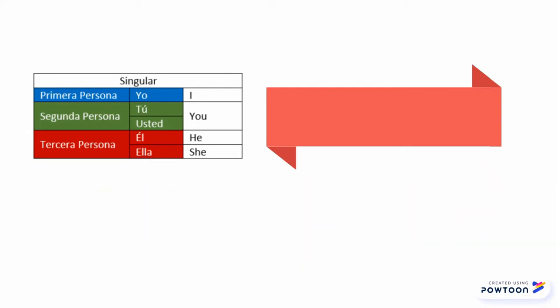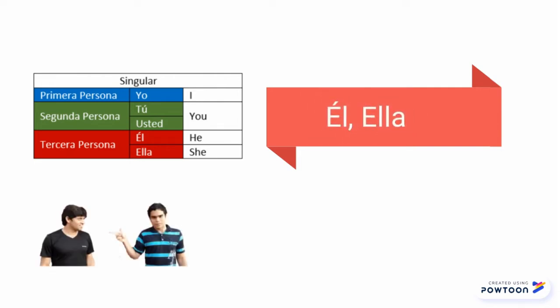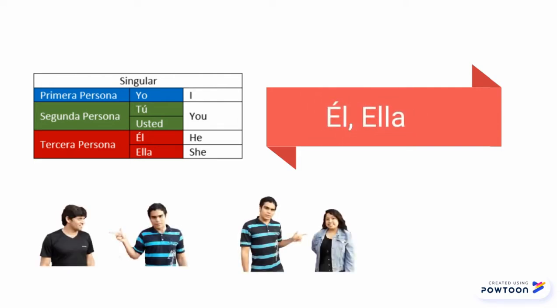The third person is the one who I am talking about — that is to say, él or ella, which is he or she in English.